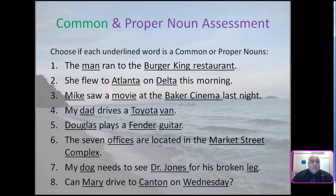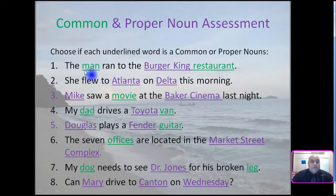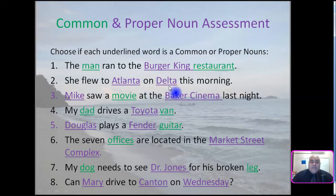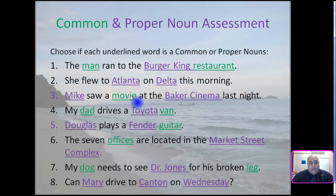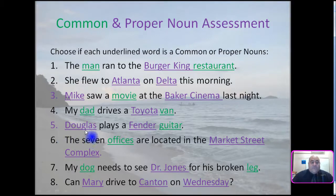Let's see the answers to the assessment. Number one: man is common, Burger King is proper, restaurant is a common noun. Number two: Atlanta and Delta are proper nouns. Number three: Mike and Baker Cinema are proper nouns; movie is a common noun. Number four: dad and van are common nouns, Toyota is a proper noun. Number five: Douglas and Fender are proper nouns.